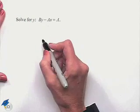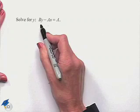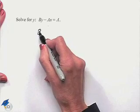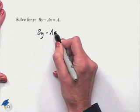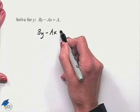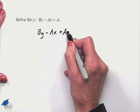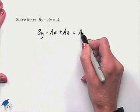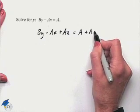We're going to add ax to both sides of the equation in order to isolate that term. So b times y minus a times x, we're going to add that a times x to the left and we're going to add the a times x to the right.